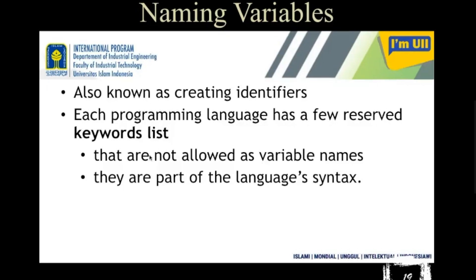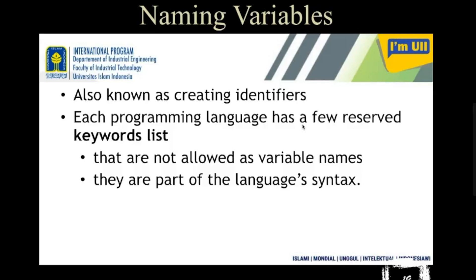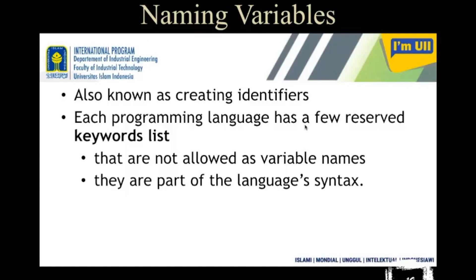A reserved word which cannot be used as a variable name — these keywords are not allowed as variable names. They are part of the language's syntax. If you use a keyword as a variable name, the compiler will identify it as part of the compiler itself, and each token has a specific meaning as per the compiler. Different compilers have different meanings for different keywords, so if you mistakenly assign those words as a variable name, it will give you errors.